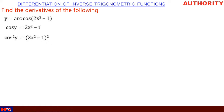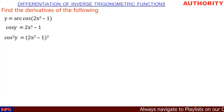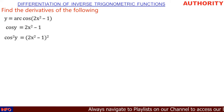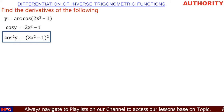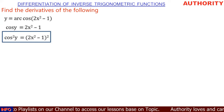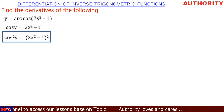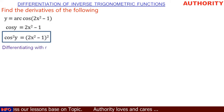If cos y = 2x² - 1, then cos²y is going to give us (2x² - 1)². We take the square of both sides, giving us cos²y = (2x² - 1)².